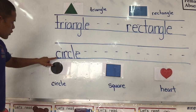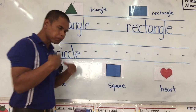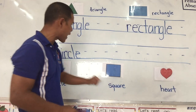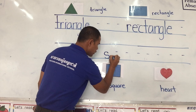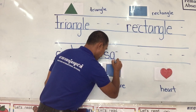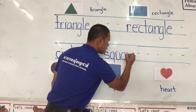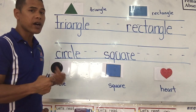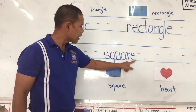Next one — square. All four sides are even. Square starts with the letter S — just like a snake, curving and curving down again. Then Q: from the middle line, all the way around, up and down. Then U, A, R, E. Let's spell square all together: S-Q-U-A-R-E.